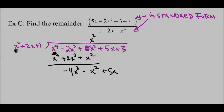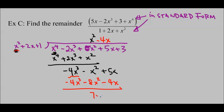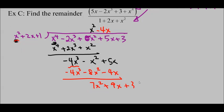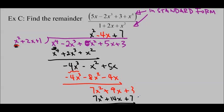Again, we're going to concentrate on the leading terms to get the answer: minus 4x. Multiply by all of the terms and subtract them. I get 7x squared plus 9x. Bring that plus 3 down. Now I've got my last term because x squared and x squared are the same degree. So I just multiply by 7. I get 7x squared plus 14x plus 7, and then over negative 5x minus 4, that is going to be our remainder. The remainder is negative 5x minus 4.